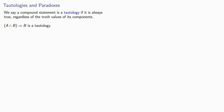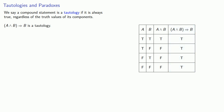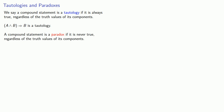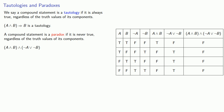It's helpful to introduce two ideas. A compound statement is a tautology if it is always true, regardless of the truth values of its components. For example, (a and b) implies b is a tautology because when we constructed its truth table, the truth values of a and b made no difference — the statement was always true. On the other hand, a compound statement is a paradox if it is never true, regardless of the truth values of its components. When we found the truth value of the previous statement, it was always false regardless of the truth values of a and b, so that statement is a paradox.